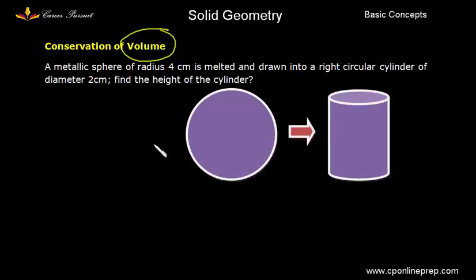Let's take an example to understand. Here a metallic sphere of radius 4 cm, so the radius of this is 4, is melted and drawn into right circular cylinder of diameter 2 cm. So here the diameter is 2 so radius would be 1. Now we have to find the height of the cylinder. How do we do? Since the volume is same we can equate the volume.